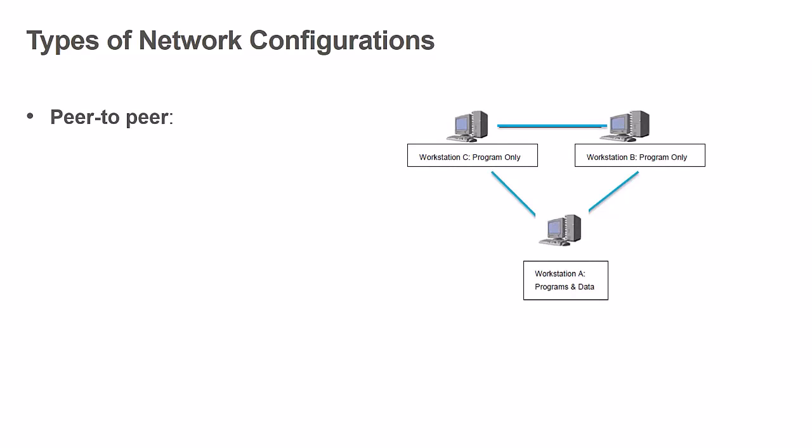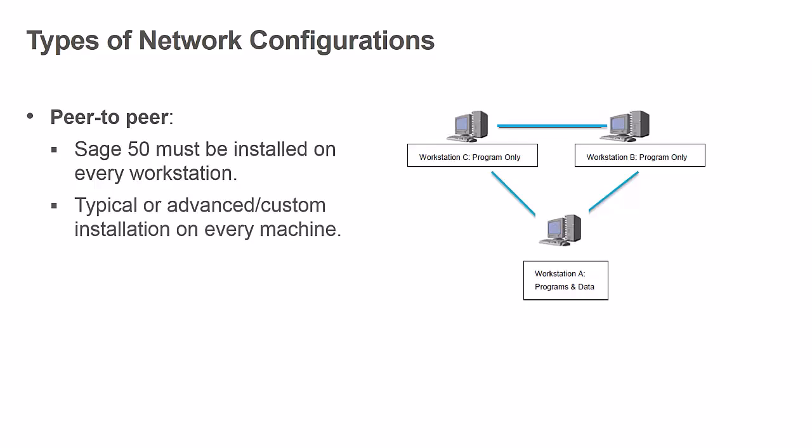Peer-to-peer networks are commonly used by small to medium businesses that do not have access to a dedicated server. In a peer-to-peer environment, several workstations are connected to the same network and share access to certain files which reside on one of the workstations in a shared location. The Sage50 program must be installed on every workstation. A typical or an advanced custom installation can be performed on every machine where you will be using Sage50. The Sage50 company data will be stored in a shared location on one of the workstations, and the other workstations should map a drive to the shared location to gain access to the data.